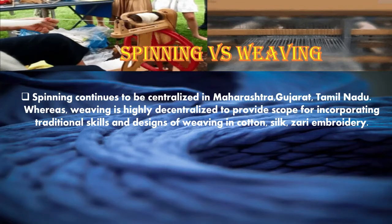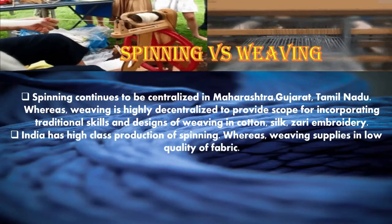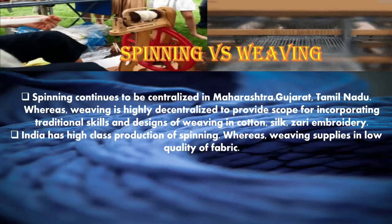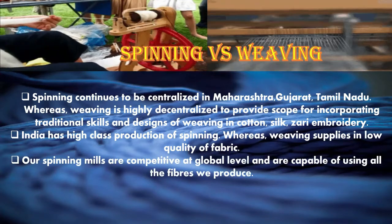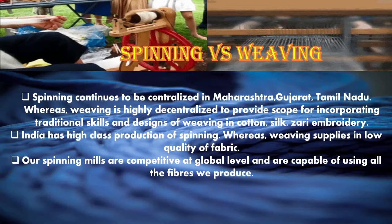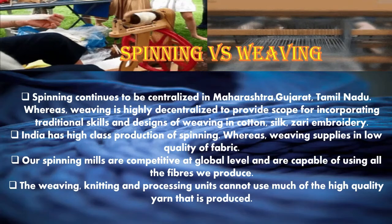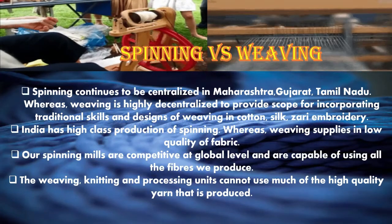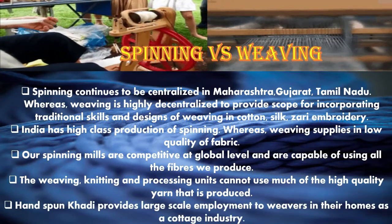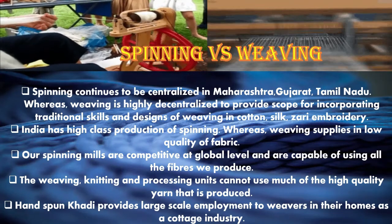India has high-class production of spinning, whereas weaving supplies fabrics of lower quality. We produce yarn at a large scale, but good quality yarn is exported to other countries, making our spinning mills competitive at the global level. In weaving and processing units, much of the high-quality yarn is exported, leaving lower quality yarn for domestic use. Today, khadi has significant demand in both national and international markets, and handspun khadi provides large-scale employment in homes as a cottage industry.